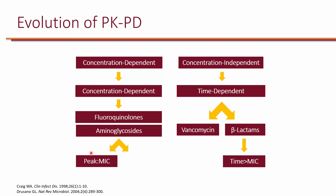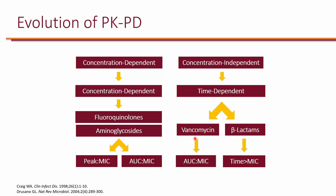For concentration-dependent antibiotics, the ratio of peak concentration to MIC is key — a higher peak-to-MIC ratio results in maximum killing. There's also the concept of AUC to MIC ratio, used for aminoglycosides, fluoroquinolones, and vancomycin. Peak to MIC is used for concentration-dependent antibiotics, time above MIC for time-dependent antibiotics, and AUC to MIC depends on the specific antibiotic — for vancomycin it indicates time-dependent activity.